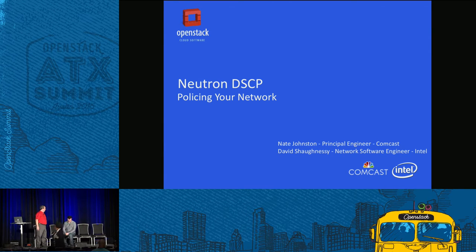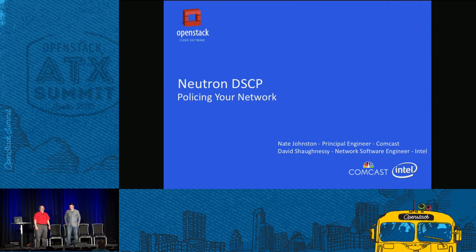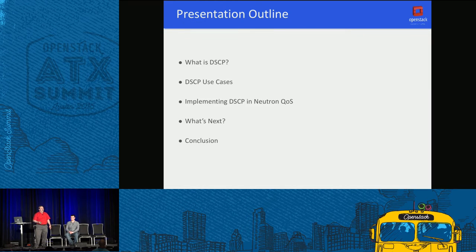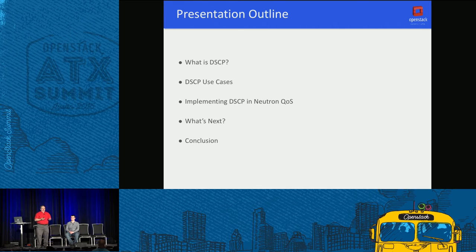Good morning everybody, thank you for coming to our talk: Neutron DSCP policing your network. My name is Nate Johnston, I'm an engineer and developer at Comcast. My name is David Chalkensee, I'm a network software engineer at Intel. Let me tell you what we're going to be talking about: first, what DSCP is; how you use it; how we implemented DSCP control in Neutron QoS; next steps; and resources for further reading.